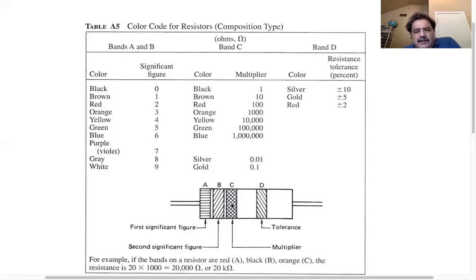So you get a two digit number from the first two bands and then you get a multiplier. So they give you the example, for example, if the bands on a resistor are red, black, orange. The resistance is 2, 0 times 10 to the three, which is 1,000, or that's 20,000 ohms or 20 kilo ohms.